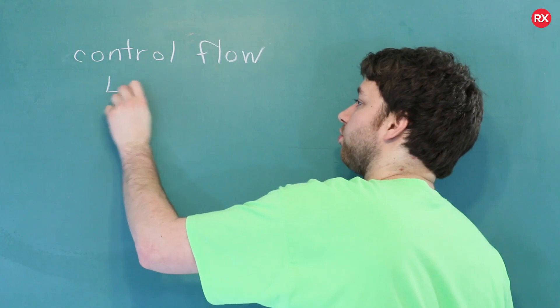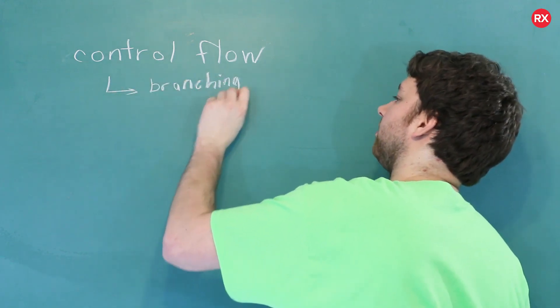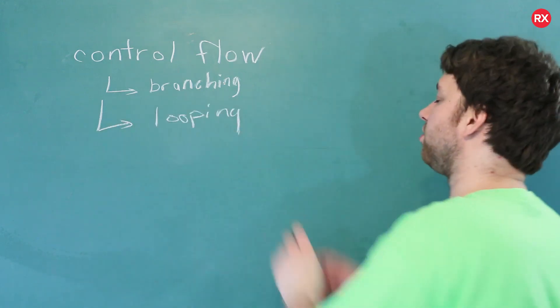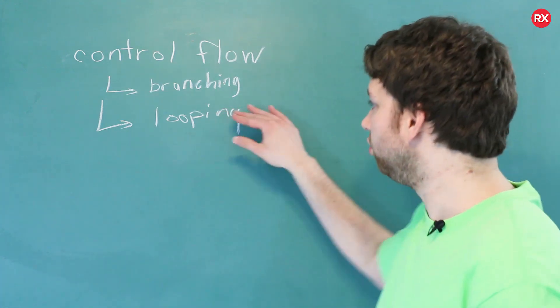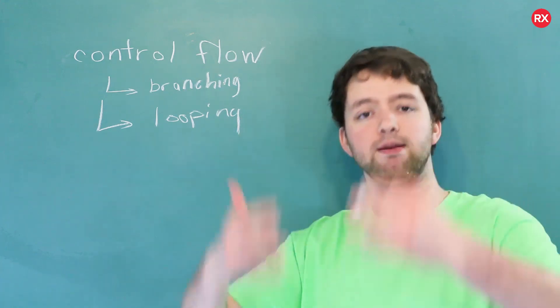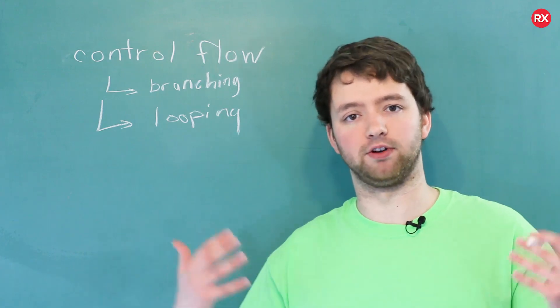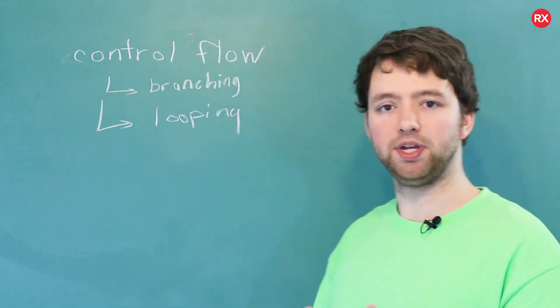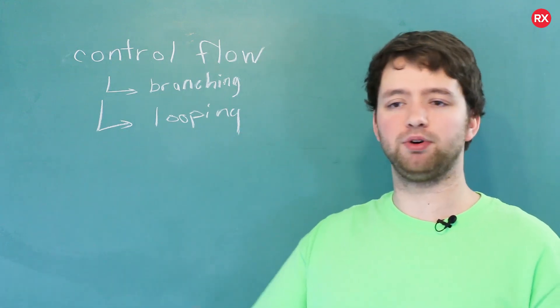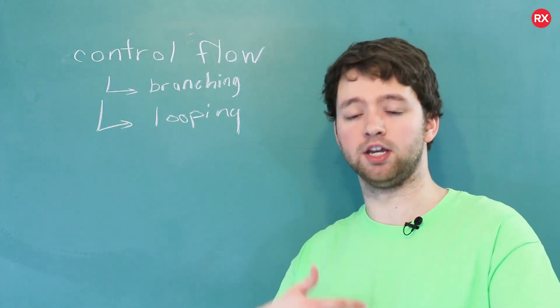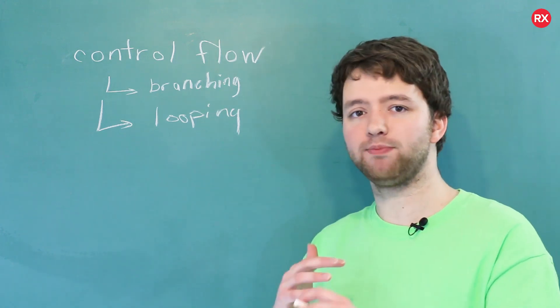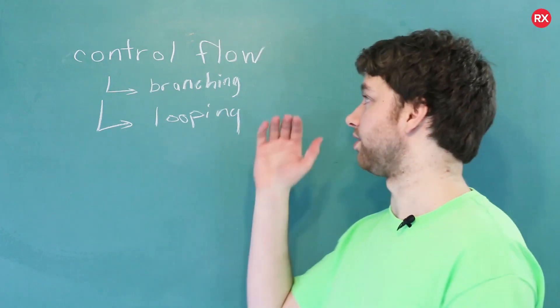So where do we start? There are two main categories of things you need to know, both within the bigger category of control flow: branching and looping. Branching is where you do conditions and will branch your application to do different things based on the result. Looping is similar, but it's going to repeat the same thing and loop through a section of code a certain number of times. These are basically the fundamental pieces to make more complex applications — to make an application that will run indefinitely and be able to interact with the user.